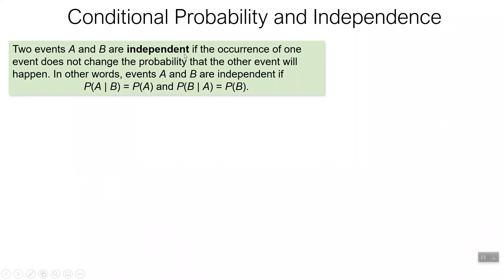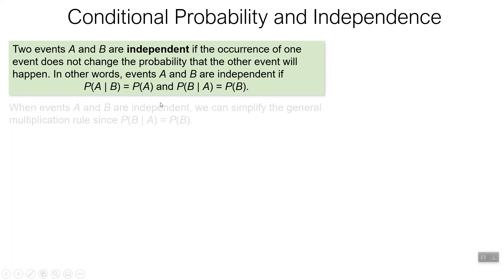Two events A and B are independent if the occurrence of one does not change the probability that the other event will happen. In other words, events A and B are independent if the probability of A, given that B happened first, is still equal to just the probability of A — and the probability of B, given that A happened first, is still just the probability of B. So one event does not change the probability of the other event happening.